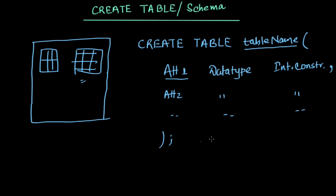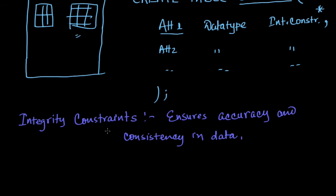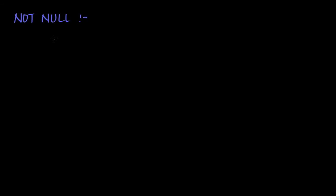This is how we create a table. Now, integrity constraints are important — we have to understand them. An integrity constraint, as the name suggests, is a restriction over some attribute to ensure integrity. Basically, it ensures accuracy and consistency of the data. Among the various integrity constraints we need to study, the first one is NOT NULL. This specifies that the value of that particular attribute cannot be null.